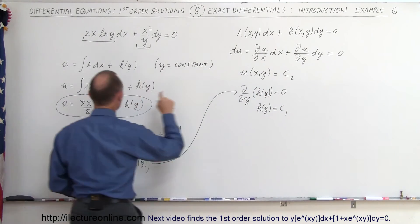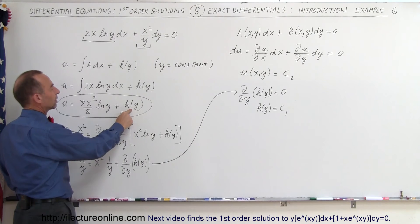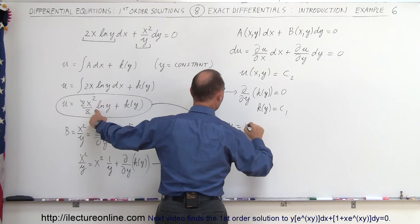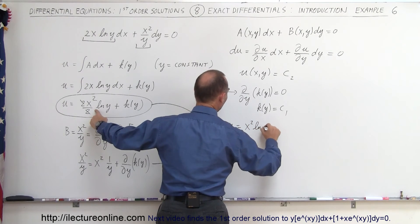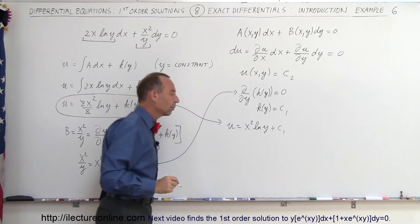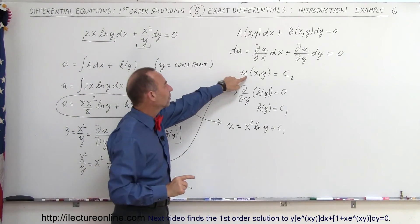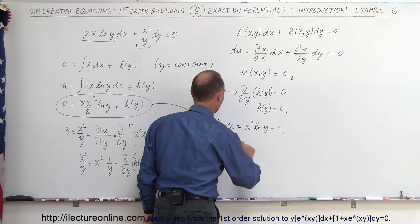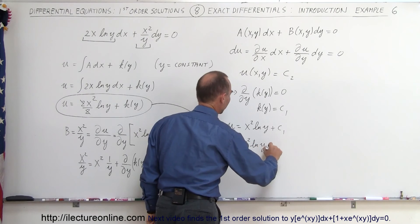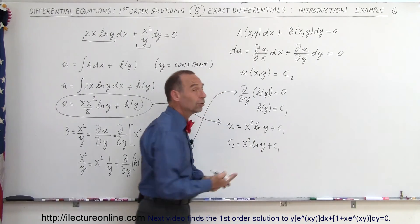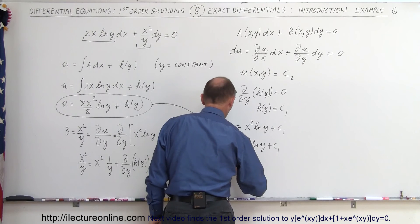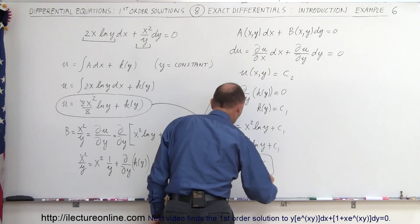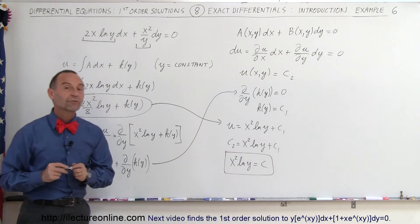We can plug this back in: the general solution u equals x squared times the natural log of y plus the constant c₁. Since u itself is also a constant, we write c₂ equals x squared times the natural log of y plus c₁. Combining the two constants, the general solution simplifies to x squared times the natural log of y equals a constant.